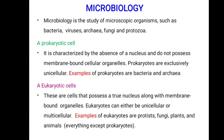Cells are divided into two types: eukaryotic and prokaryotic. Eukaryotic cells possess a true nucleus with membrane-borne organelles, and they are either unicellular or multicellular. Prokaryotic cells are characterized by the absence of a nucleus and do not possess membrane-borne cellular organelles; they are exclusively unicellular. Examples of prokaryotic cells are bacteria and archaea, while examples of eukaryotic cells are protists, fungi, plants, and animals.